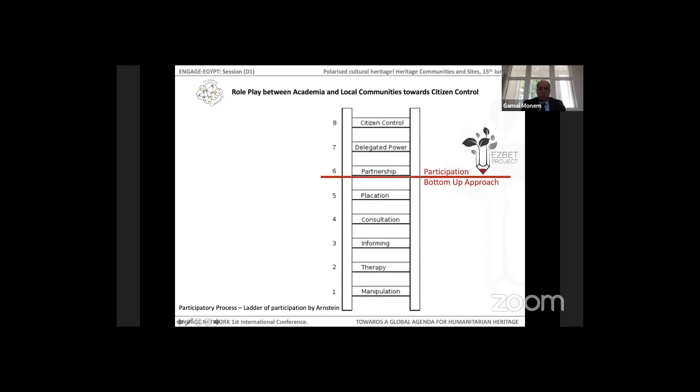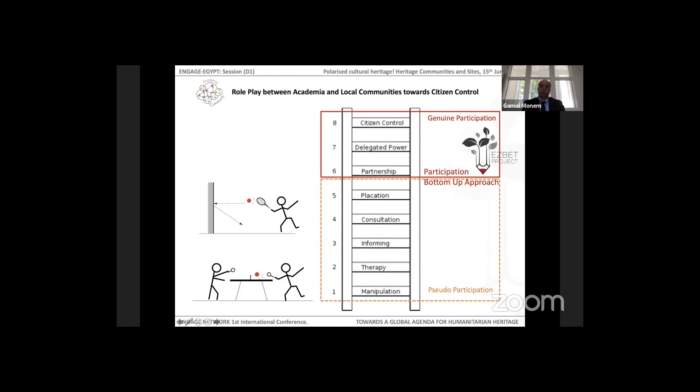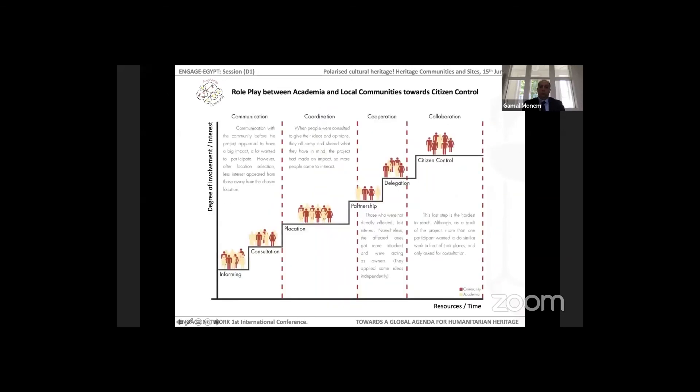Back to the theories, we checked where Ezbet project is located on the ladder of participation by Arnstein, and we can identify our work on the level of partnership based on a bottom-up approach towards citizen control. Our participatory approach can be defined also as genuine participation where we can easily say, in other words, we are playing with the community ping-pong instead of squash. Sharing resources, time, and power is the main approach towards real collaboration and towards handing over the whole process to the citizen and giving them control.